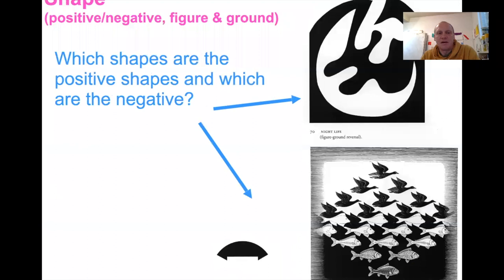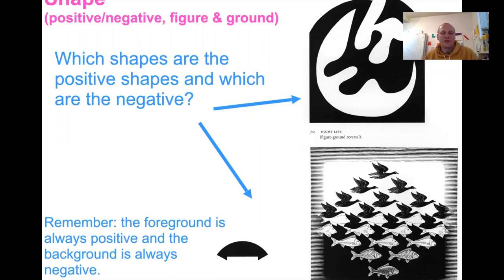Artists have used this relationship to confuse and make artworks interesting. These are Escher prints — examples where the positive and negative space is purposefully confused. Foreground is always positive and background is always negative, and he plays with this, flipping back and forth what is foreground and what is background.